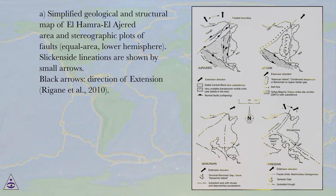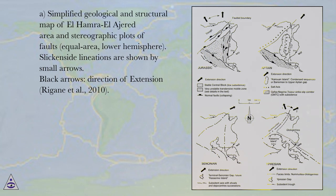Figure 6A: Simplified geological and structural map of L-Homra L-Ired area and stereographic plots of faults, equal area, lower hemisphere. Slick inside lineations are shown by small arrows. Black arrows indicate direction of extension — Riggan et al., 2010.